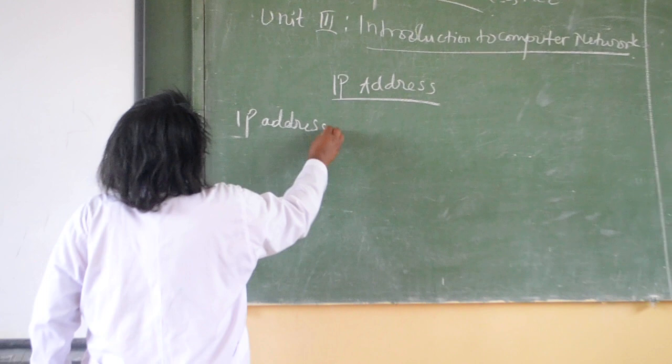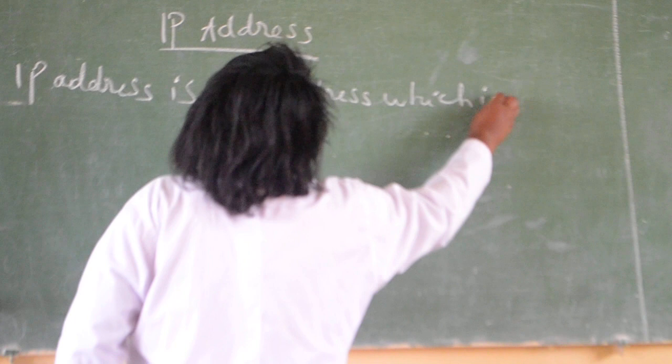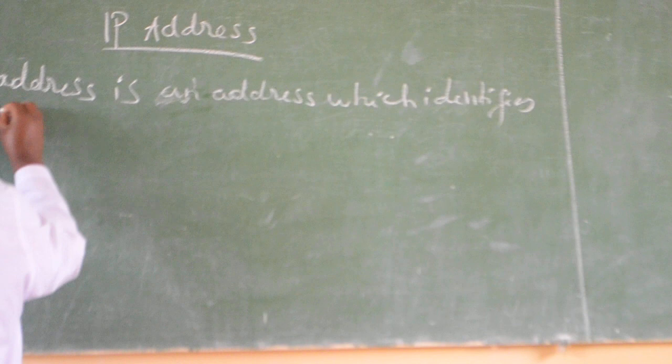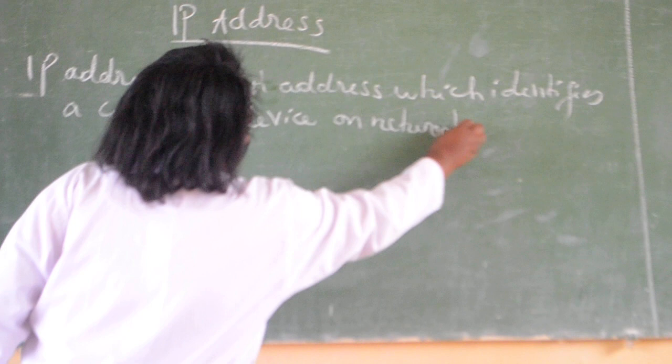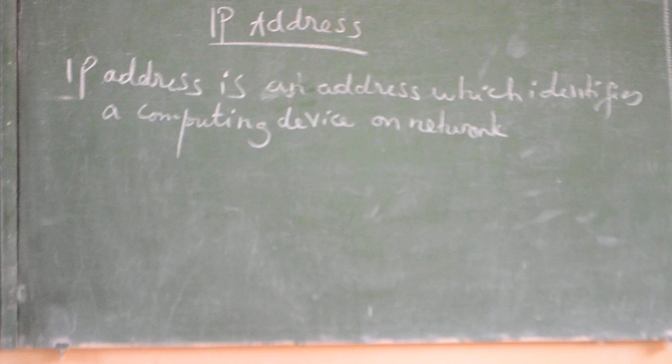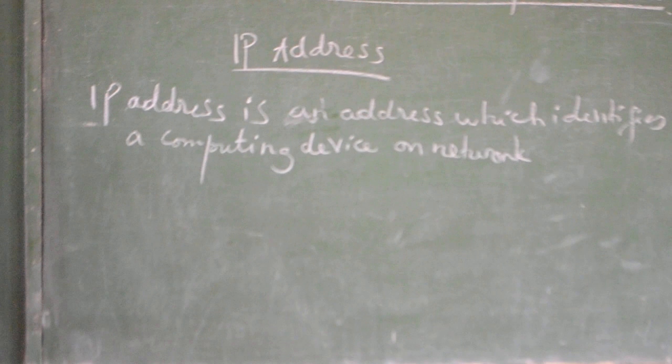So you see, as a human person has the address, each device on the network must have IP address in order to be known by any network which is using it. The IP address has a structure. Now let us see the structure of IP address.